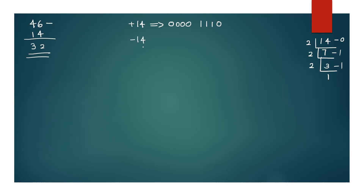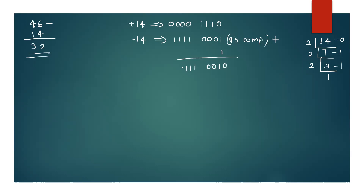Now, what is minus 14? We find it using 2's complement. The 1's complement of 00001110 is 11110001. Adding plus 1 gives the 2's complement: 11110010. So minus 14 in 2's complement form is 11110010.